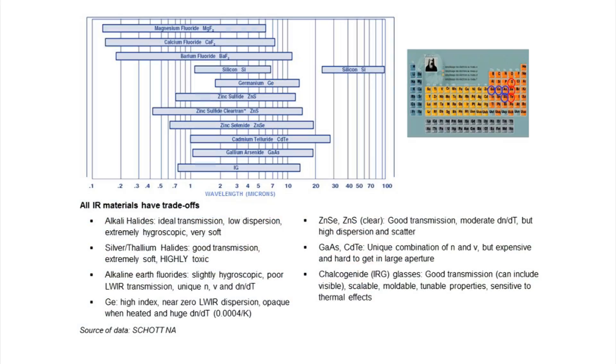Why would I use chalcogenides? There are so many great materials out there — germanium, the zinc materials, fluorides. They're all great for certain applications, but they all have limitations as well. With all of those materials that are crystalline in nature, whatever properties are inherent in that crystal is what you have — there's not much changing. Chalcogenides are glasses, not crystals. As such, we're able to formulate them differently to meet different demands for refractive index, transmission range, hardness, Tg, and different things like that.